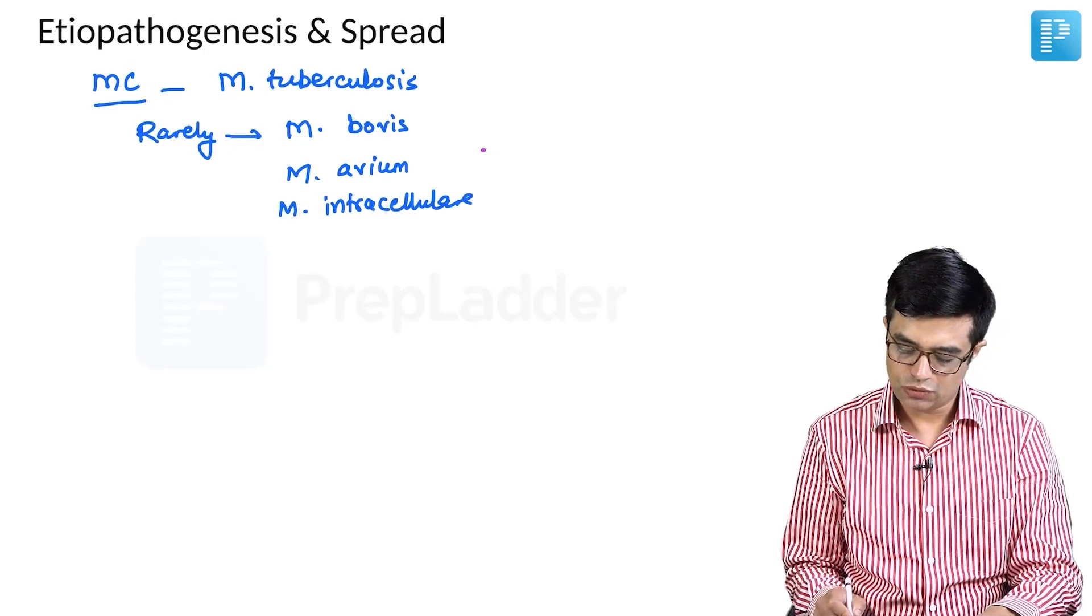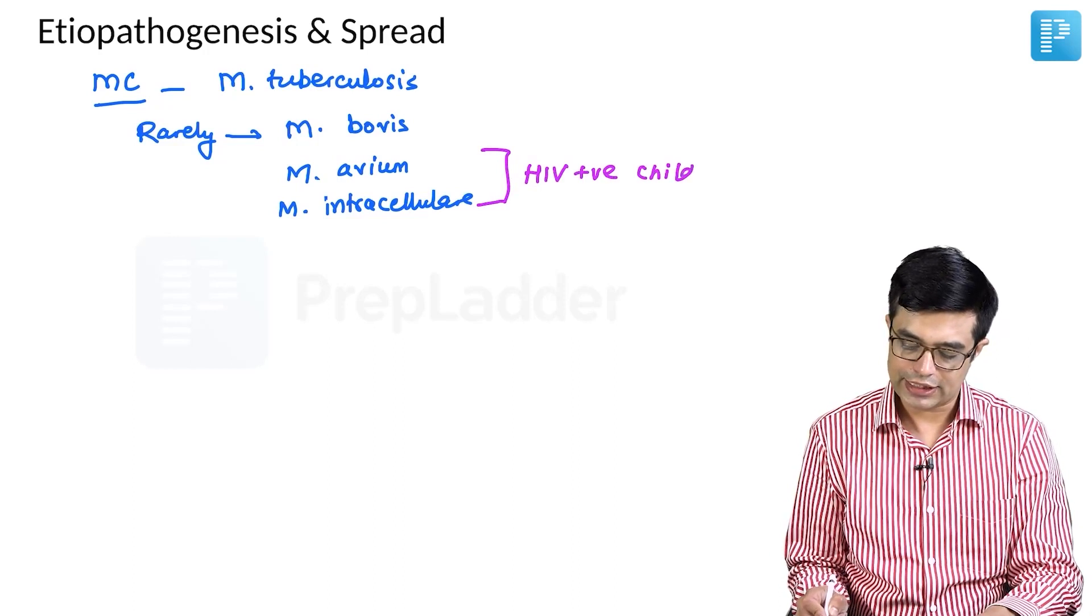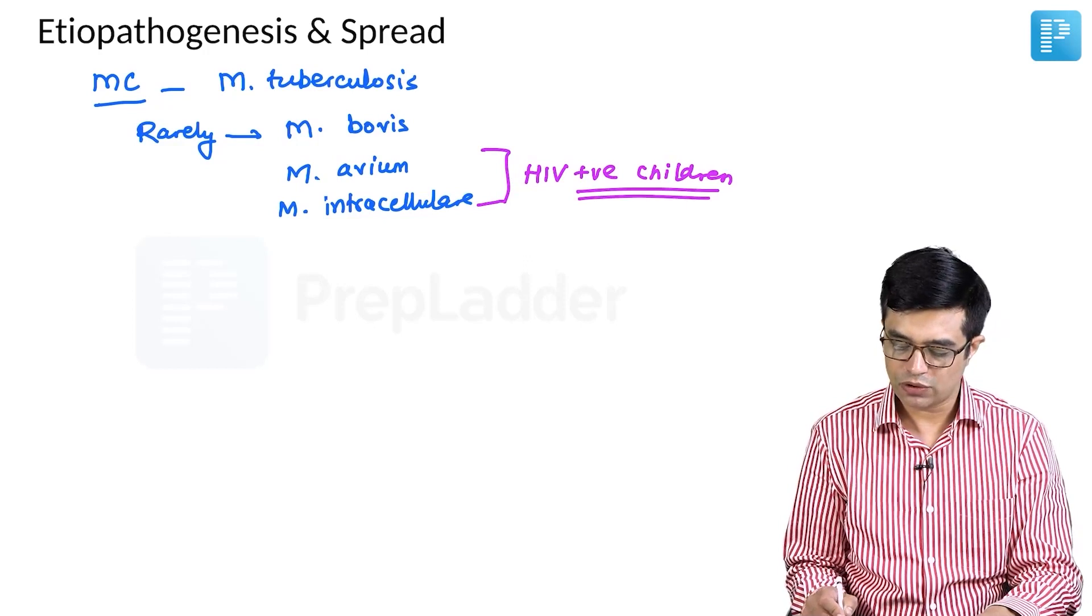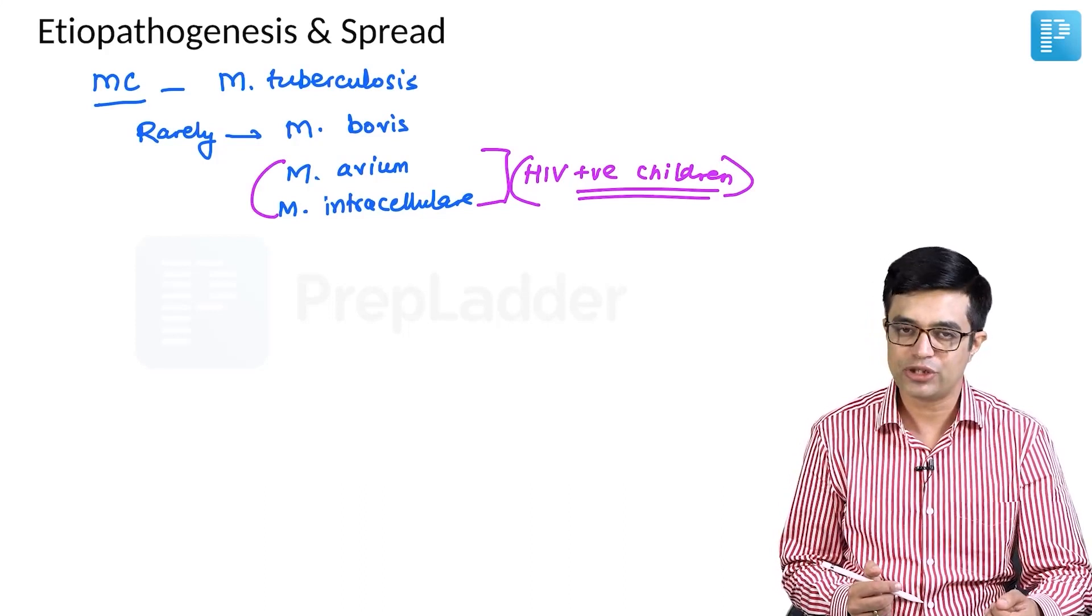Infection by these two organisms are commonly seen in HIV positive children. HIV positive children can have Mycobacterium tuberculosis also, but these infections, these two organisms are not that common in immunocompetent children.